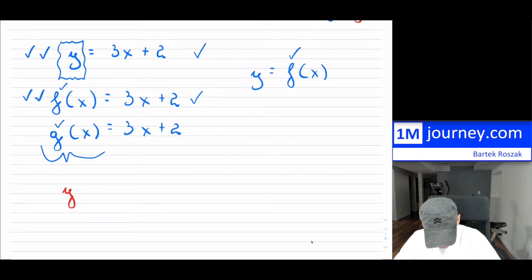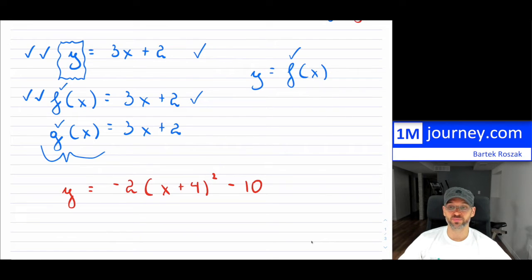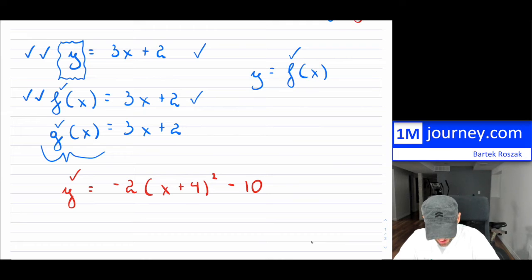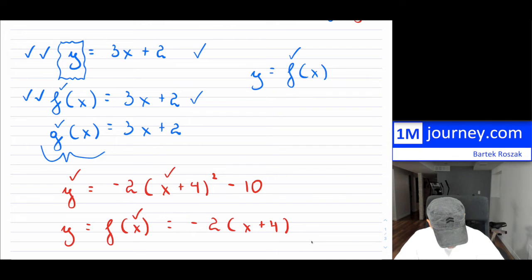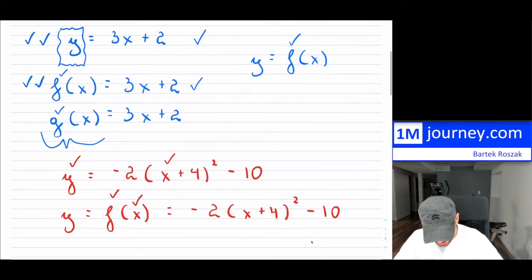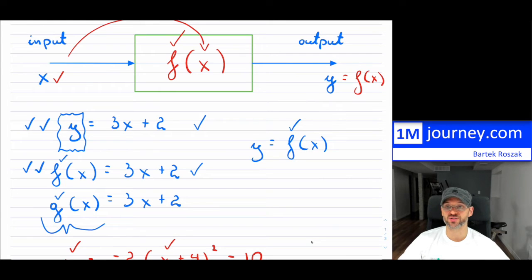Here's another example — a quadratic in vertex form: y = -2(x + 4)² - 10. This quadratic is actually a function, so instead of writing y and relating y to x, you would simply replace y with f(x). So f(x) = -2(x + 4)² - 10. Nothing really changes in the expression itself, but as soon as you write this special notation, it is known as function notation.